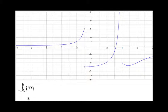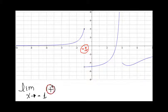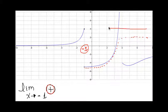Let's say that they ask you for the limit when x approaches negative 1 from the right. The first step is to figure out where x equals negative 1 is. Since you have a plus on top, that means you need to come from the right. I'm going to come all the way from the right and get really close to whatever the function is approaching at negative 1. Since I'm coming from the right, the function is getting really close to the y value of negative 5. So when the limit of x approaches negative 1 from the right, the answer is negative 5.